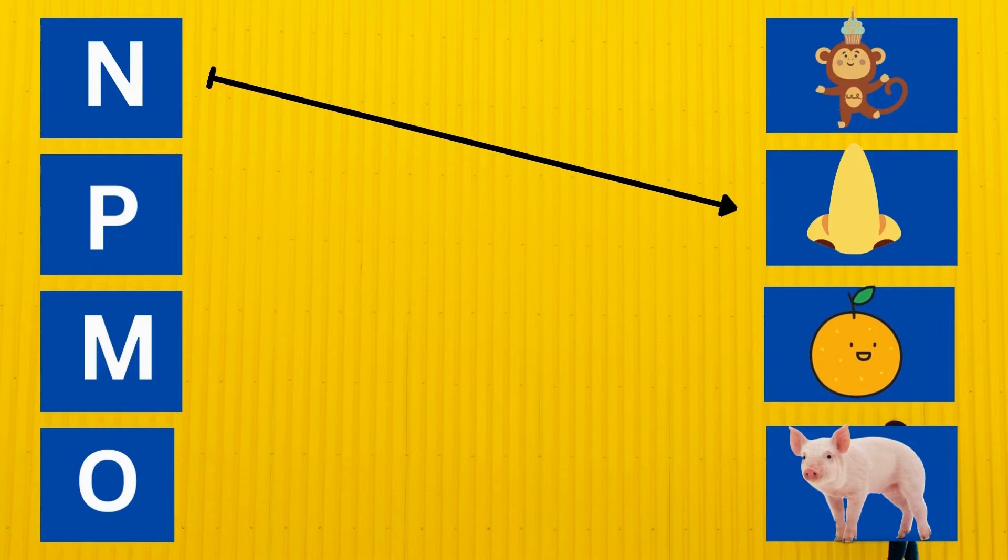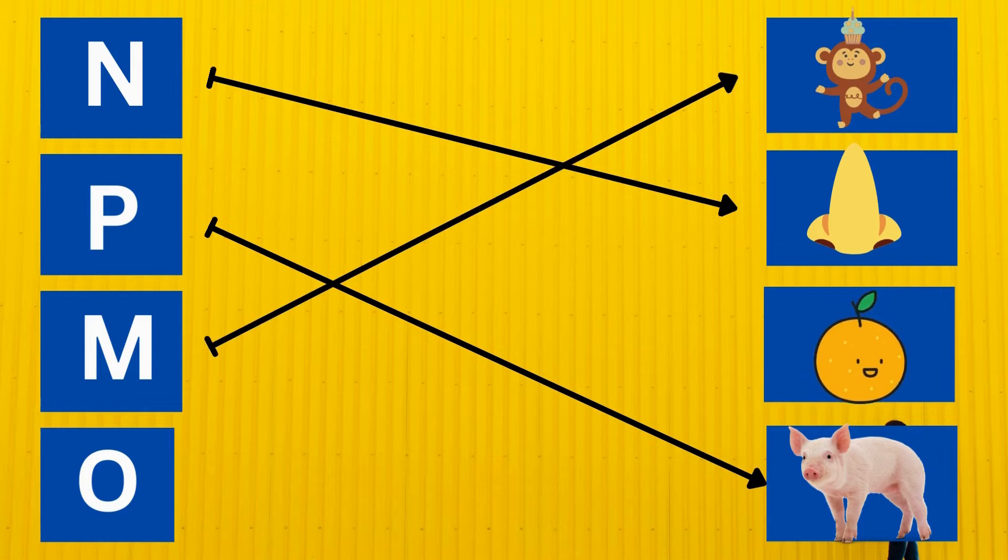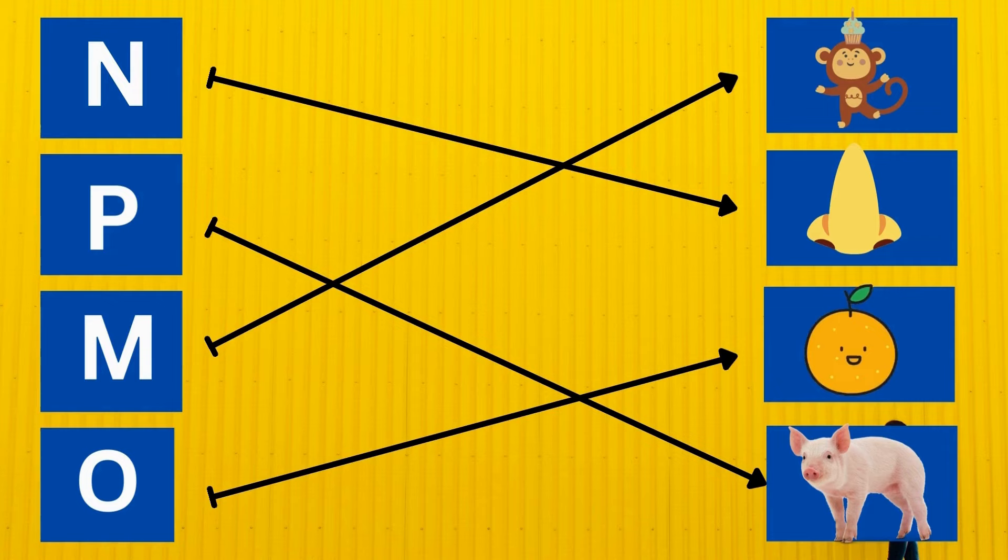N is for nose. P is for pig. M is for monkey. O is for orange.